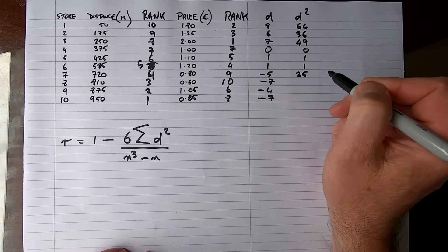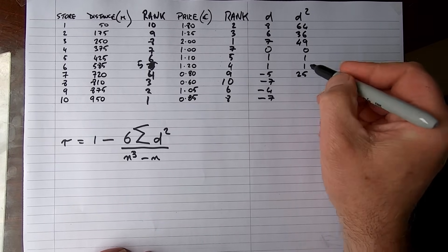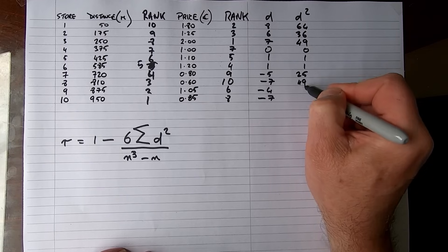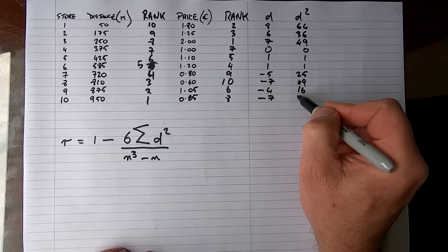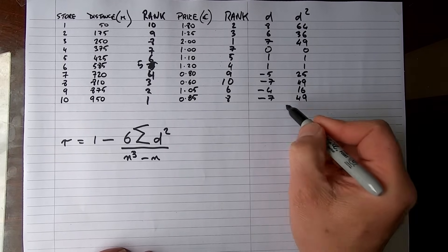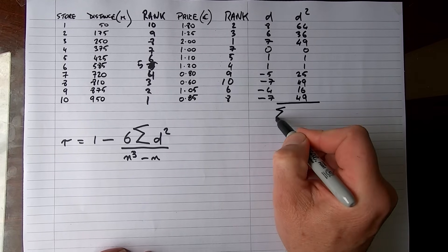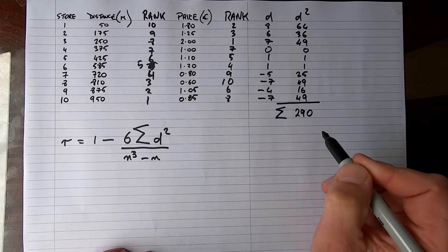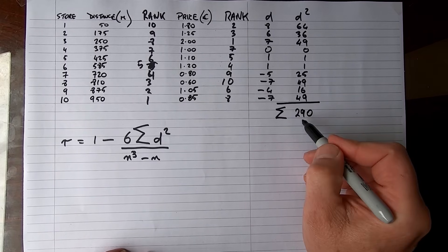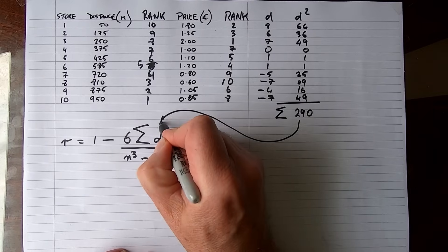Minus 5 times minus 5 is 25, minus 7 squared is 49, minus 4 squared is 16, and minus 7 squared is 49. So when we add all of those up, we get the sum of d squared. We add all of that up, it adds up to 290, and this value is the one that's going to go into our formula here.